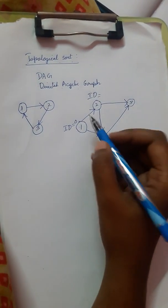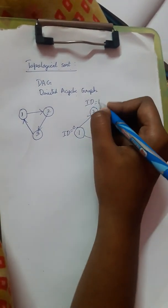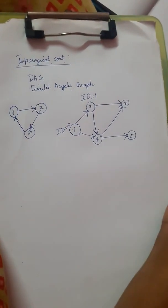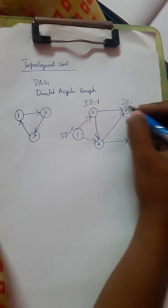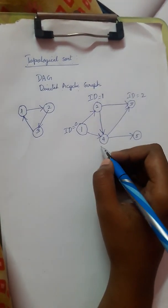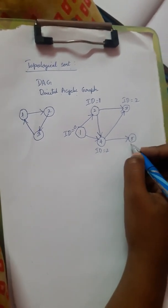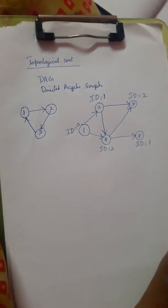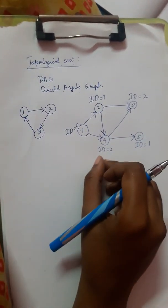For node 2, only one in-degree is coming, so in-degree of 2 is 1. For node 3, in-degree is 2. For node 4, in-degree is 1.